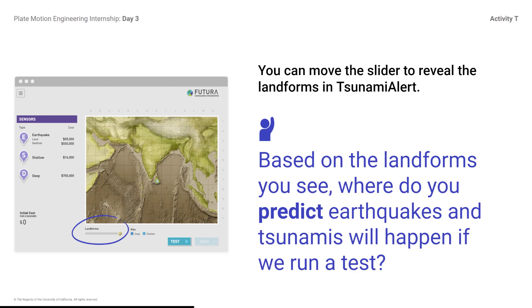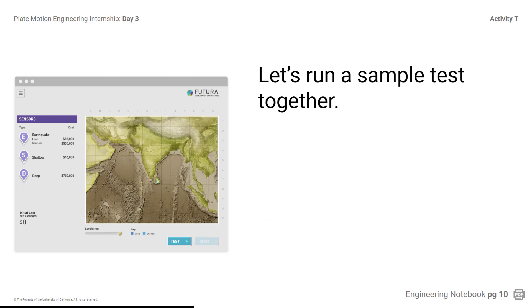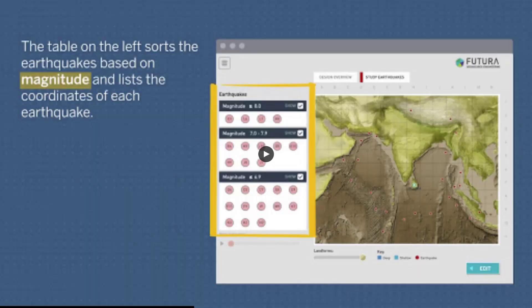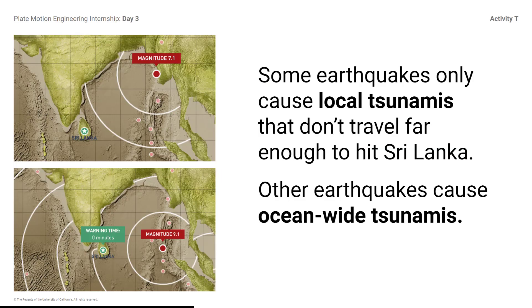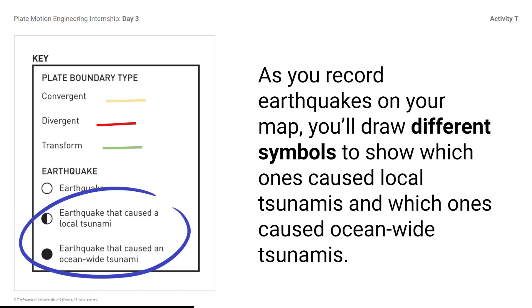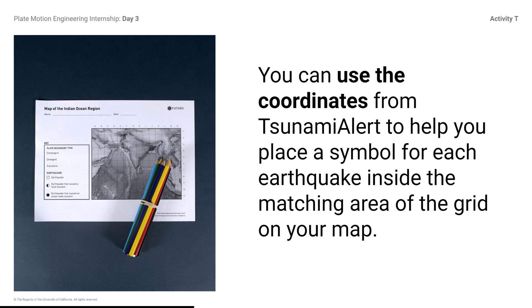Based on these landforms you see, where do you predict earthquakes and tsunamis will happen if we run a test? Now the map matches the version you have on your printed maps, except the printed version is black and white and has more labels. Let's run a sample test together. Students, play the video. Which type of plate boundary is likely to be near this earthquake, since it caused a tsunami? You might respond: convergent. Remember, trenches and mountains are the landforms that are associated with a convergent boundary. Some earthquakes only cause local tsunamis that don't travel far enough to hit Sri Lanka. Other earthquakes cause ocean-wide tsunamis. As you record earthquakes on your map, you'll draw different symbols to show which ones cause local tsunamis and which ones cause ocean-wide tsunamis. You can use the coordinates from Tsunami Alert to help you place a symbol for each earthquake inside the matching area of the grid on your map.